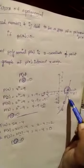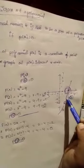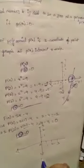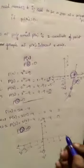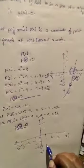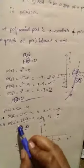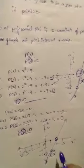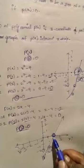In the same way, for p of x equals two x minus four, plotting the y-axis and x-axis with points: when x equals one, p of one is minus two, giving point (1, -2). When x equals two, p of two is zero, giving point (2, 0). Drawing a straight line through these points, this line intersects the x-axis at point (2, 0). This point is called the zero of the polynomial p of x.